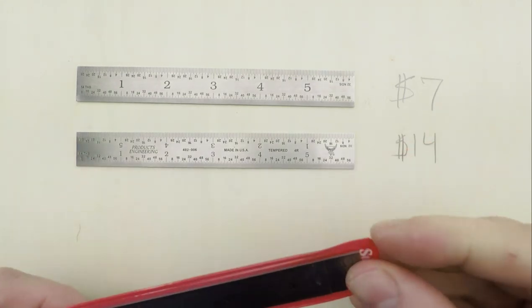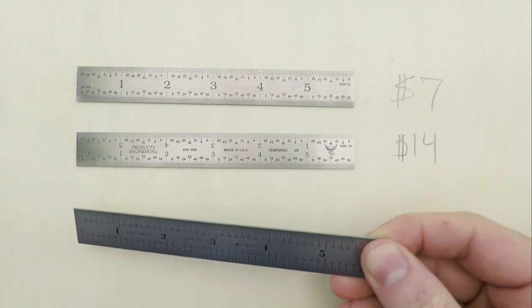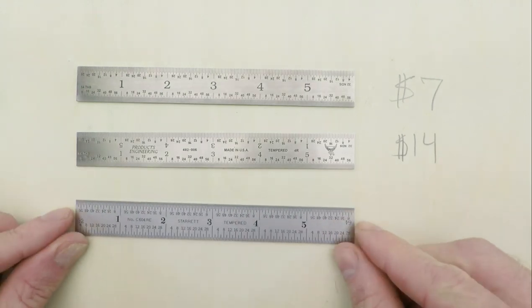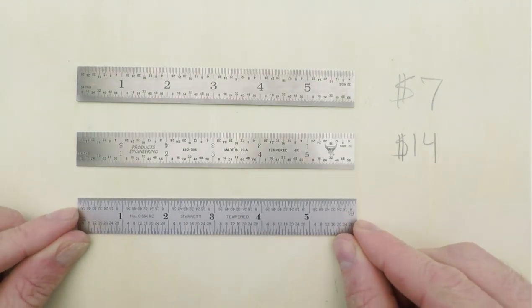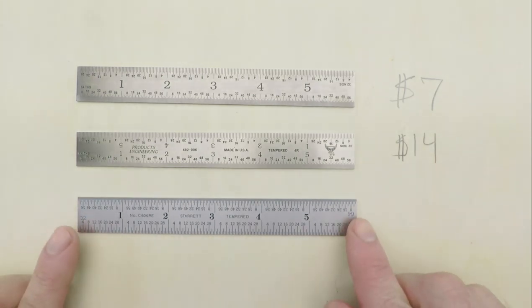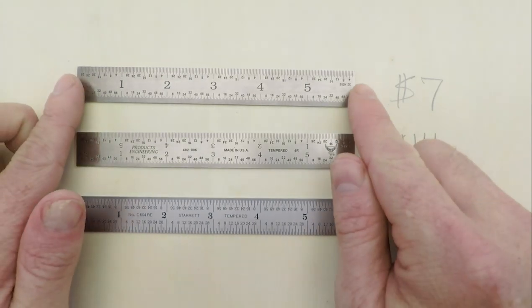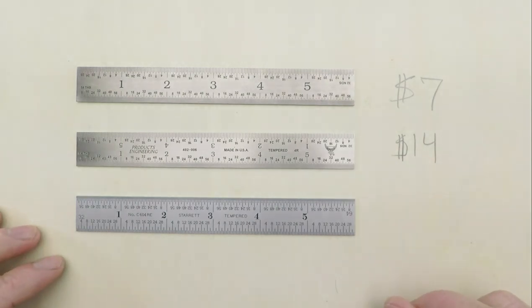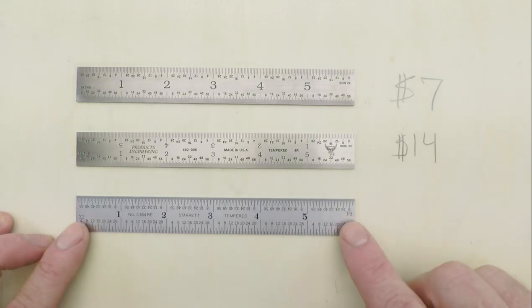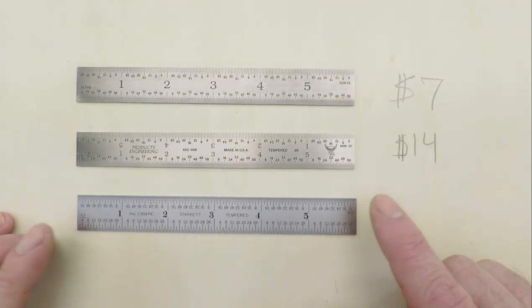And on the deluxe end, we have this Model C604RE-6 by the LS Starrett company. Starrett, if you don't already know, is kind of legendary among tool enthusiasts, especially in the United States. It's a 130-year-old, Massachusetts-based company that has an absolutely outstanding reputation for making top-of-the-line tools, which are priced accordingly.